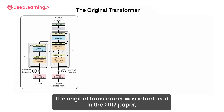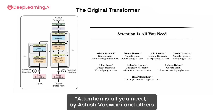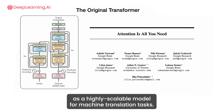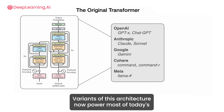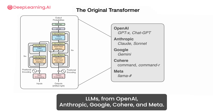The original transformer was introduced in the 2017 paper 'Attention is All You Need' by Ashish Vaswani and others as a highly scalable model for machine translation. Variants of this architecture now power most of today's LLMs from OpenAI, Anthropic, Google, Cohere, and Meta.